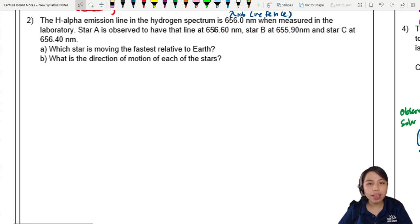So we have three stars: star A, star B, and star C. Which star is moving fastest relative to Earth? So we're trying to find who is the fastest and the direction of motion.